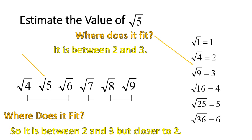On a number line, the square root of 5 fits right there — we would say it's between 2 and 3, but it's closer to the number 2. You can see that on this number line: the square root of 4, or 2, is at the far left side, and the square root of 9, or 3, is at the far right side. So the square root of 5 fits in between them, but it's farther to the left — in other words, closer to the number 2.